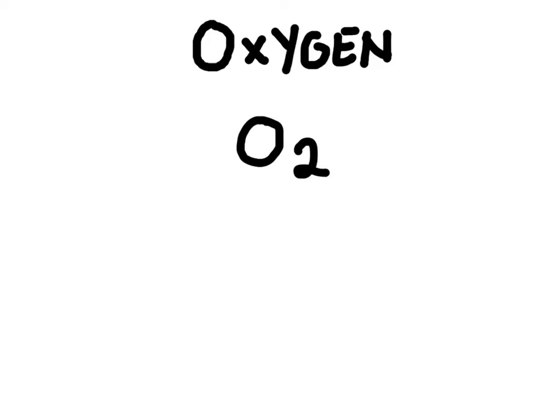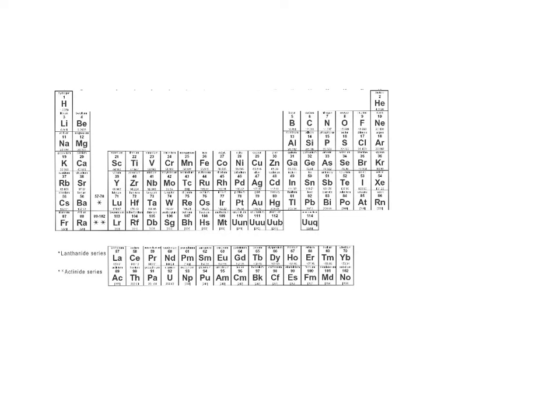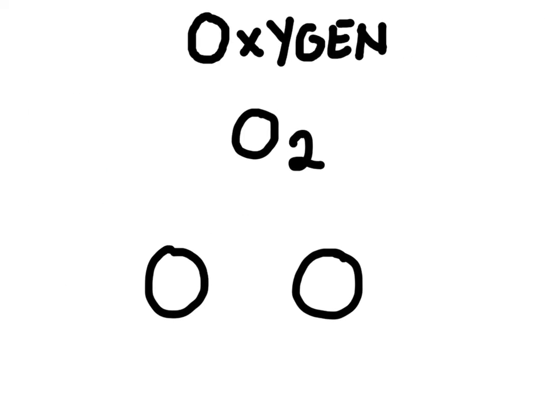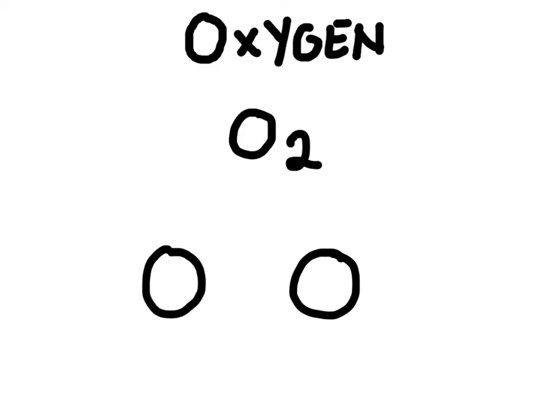We want to see the structural formula for oxygen here, so the first thing we'll do is draw a Lewis structure for each one of these oxygens. If we look on the periodic table, oxygen is here in group six, and so it has six valence electrons. So we can put those six valence electrons around each oxygen.